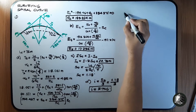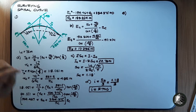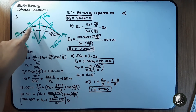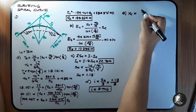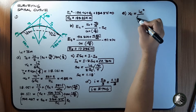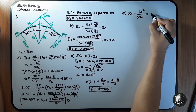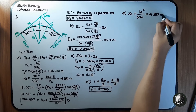For Letter E, we find the offset from the tangent at the end point of the spiral, which is Xc. Using the formula Xc = Lc² / (6Rc) = 937.5 / 193.254 = 4.851 meters. This is the perpendicular offset from the initial tangent to the end of the spiral.